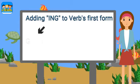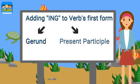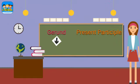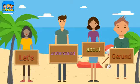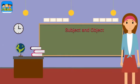The verb -ing form is used in two ways: first as a gerund, and second as a present participle. A gerund is used as a noun form, while a present participle is used as a modifier or in progressive verbs.